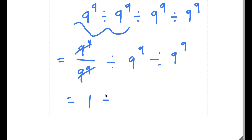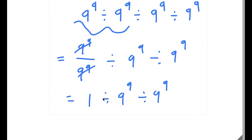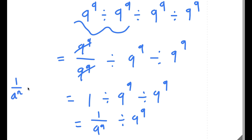I'm left with 1 divided by 9 to the power of 9 divided by 9 to the power of 9. Again, we go in order, so now we do 1 divided by 9 to the power of 9, which equals 1 over 9 to the power of 9. Now, if I have something in the form 1 over a to the power of n, this is the same as a to the power of negative n. So 1 over 9 to the power of 9 equals 9 to the power of negative 9.